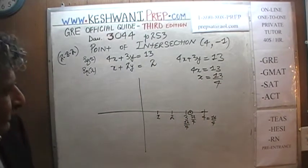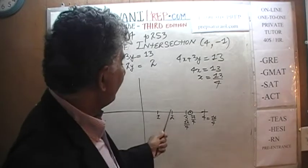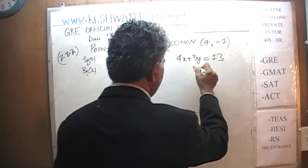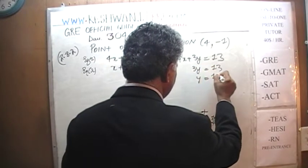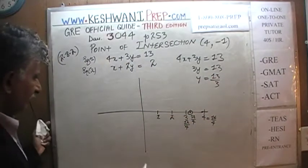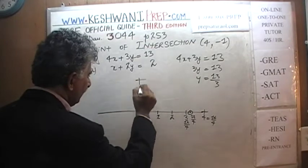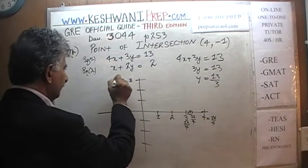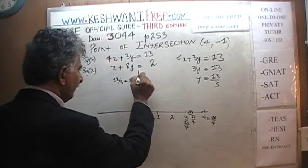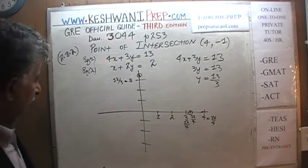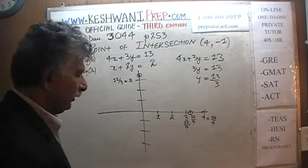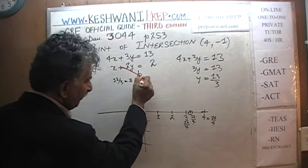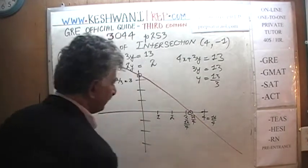Now let's make x equal to 0. When x is equal to 0, this term drops out and 3y equals 13, so y is going to be 13 thirds. On the y-axis: 1, 2, 3 — which is 12 thirds. So 13 thirds is just above 3, somewhere here. That's our first line — the first equation. It's not going to look perfectly nice since we're doing it freehand, but it looks something like this.